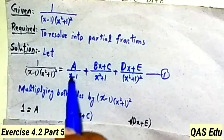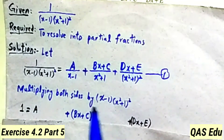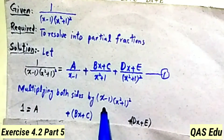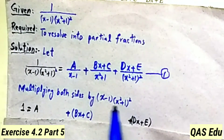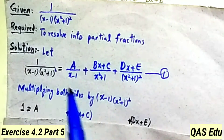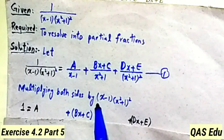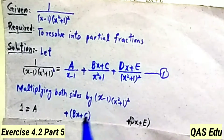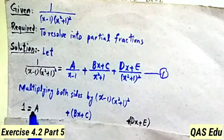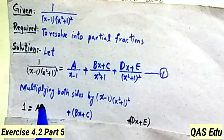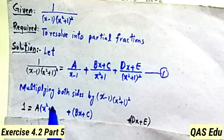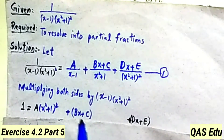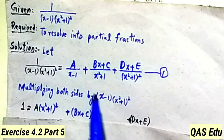Multiplying x minus 1 by x minus 1 into x square plus 1 whole square, the x minus 1 terms cancel, leaving A multiplied by x square plus 1 whole square.